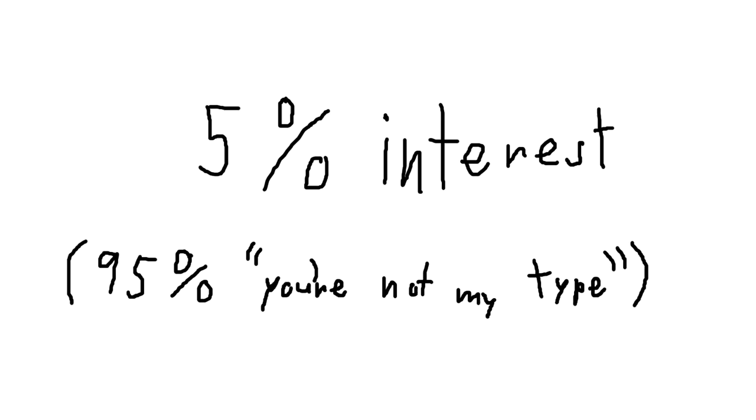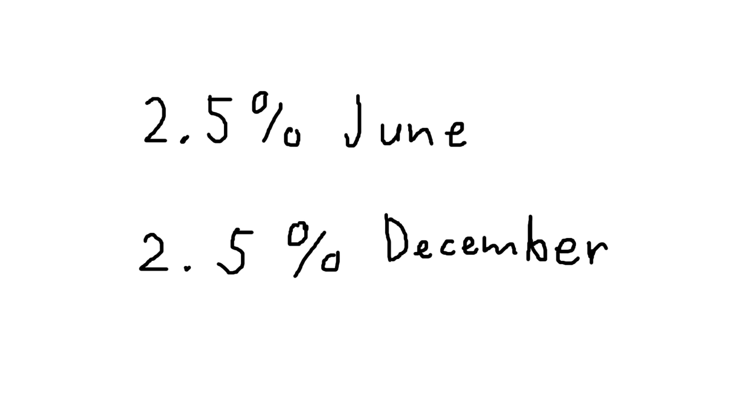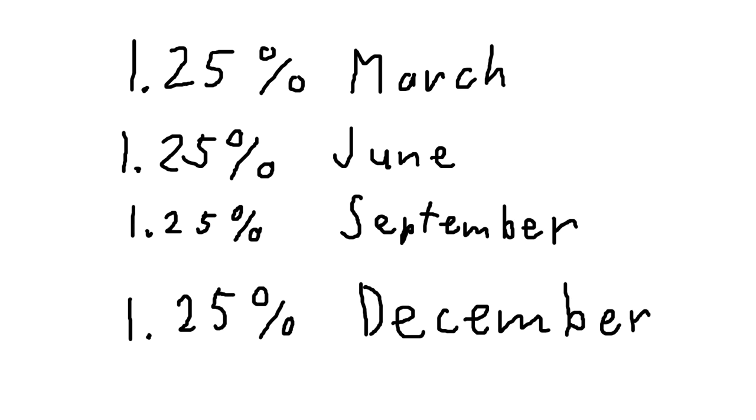This is what it means. Imagine a bank gives you 5% interest every year, which never happens anymore, but go with it. So they give you 5% once a year. It's slightly nicer to get 2.5% twice a year instead. It's slightly better than that to get 1.25% four times a year.